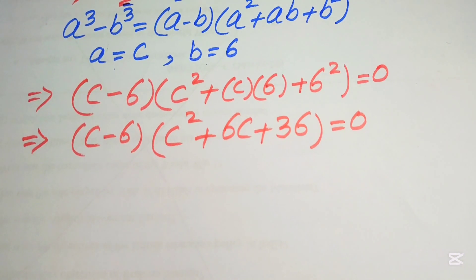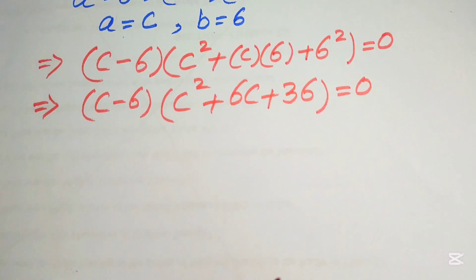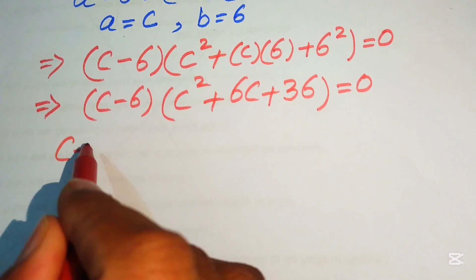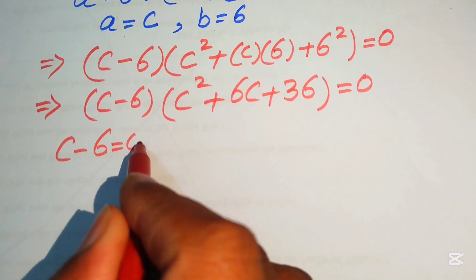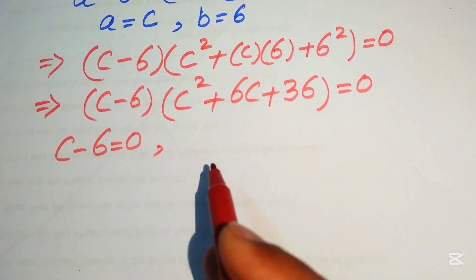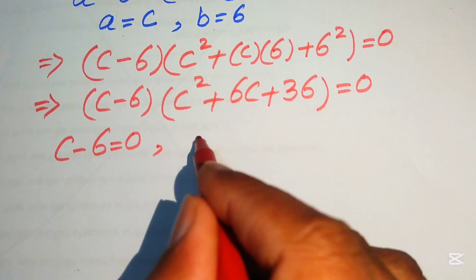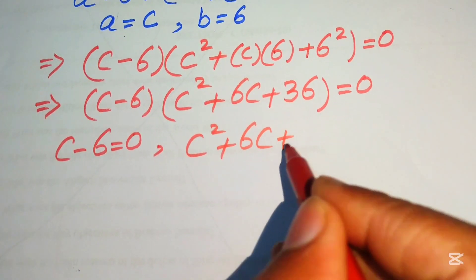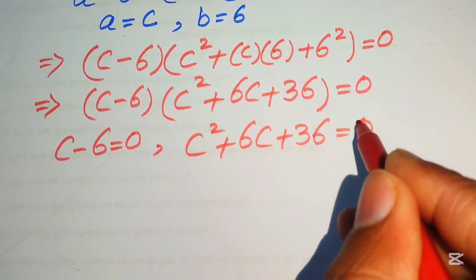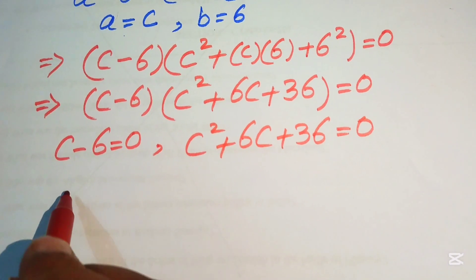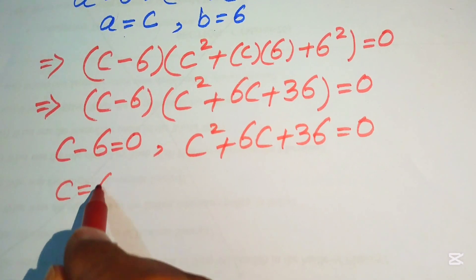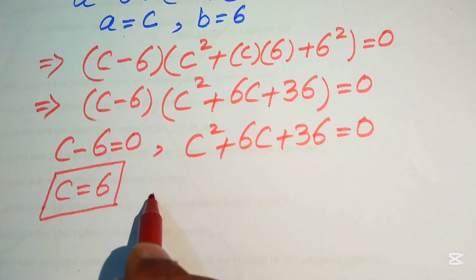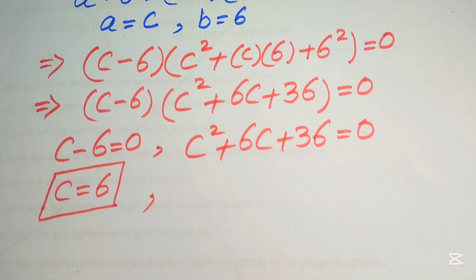We divide this equation into two cases. The first case is C minus 6 equals 0, from which we easily get C equals 6. The second case is C squared plus 6C plus 36 equals 0.